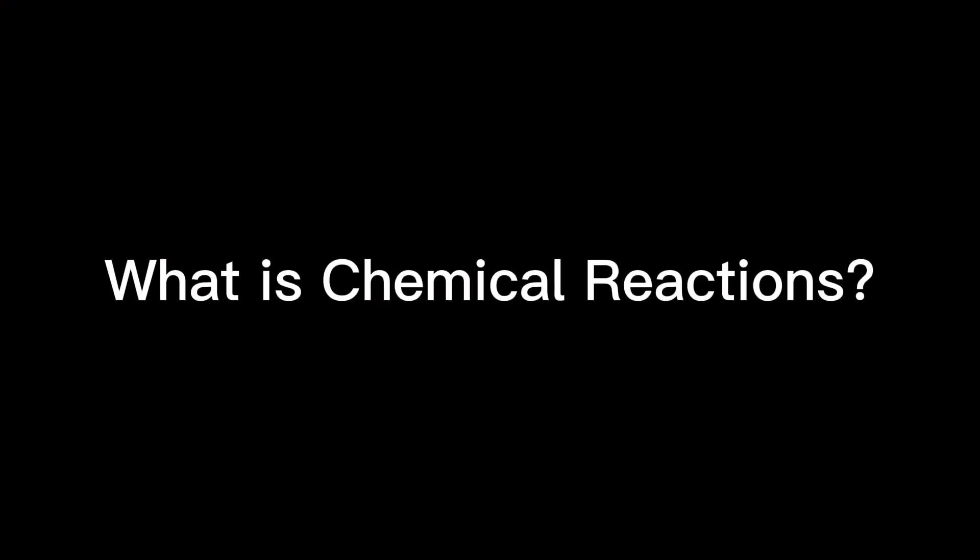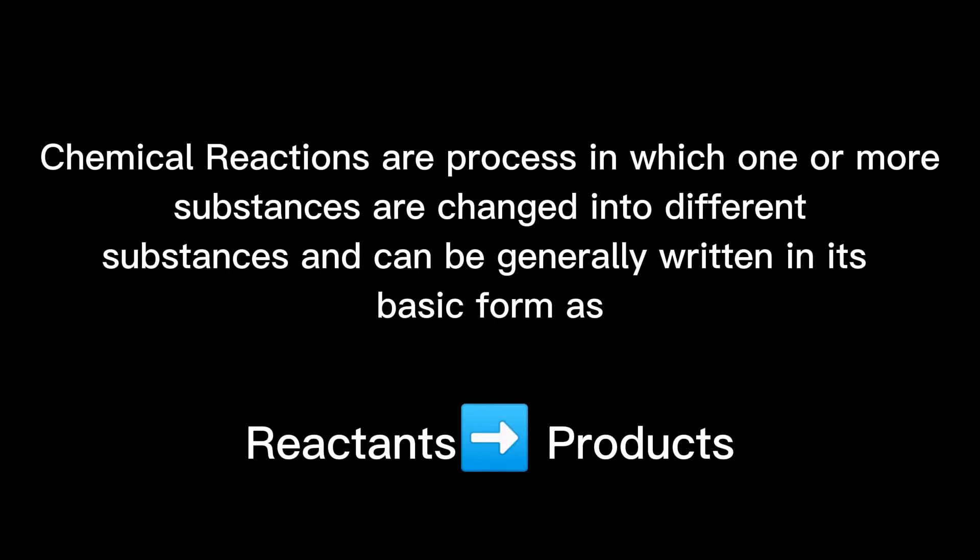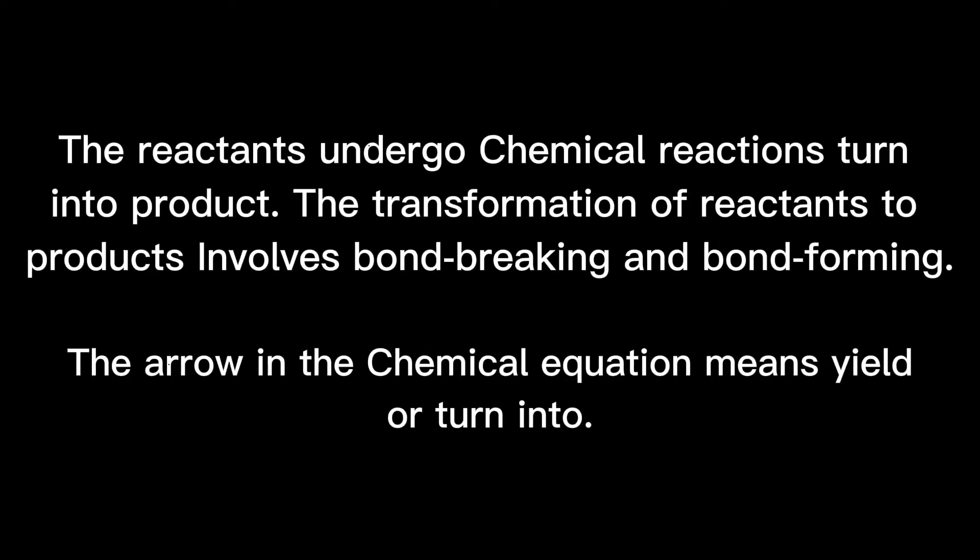Hi everyone. For this video we will have a simple activity on classification, composition of matter, and chemical reactions. Chemical reactions are processes in which one or more substances are changed into different substances. They can be written in basic form as reactants to products. The transformation of reactants to products involves bond breaking and bond forming. The arrow in the chemical equation means yield or turned into.